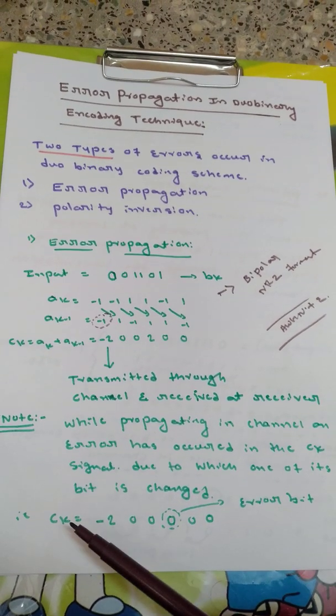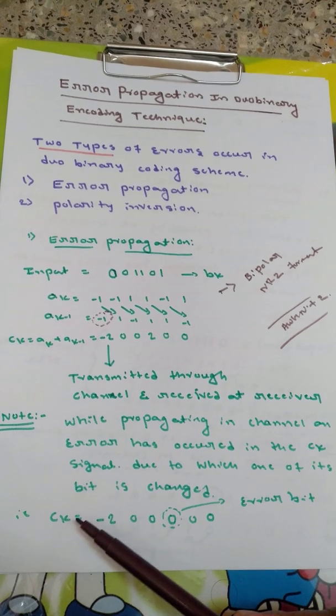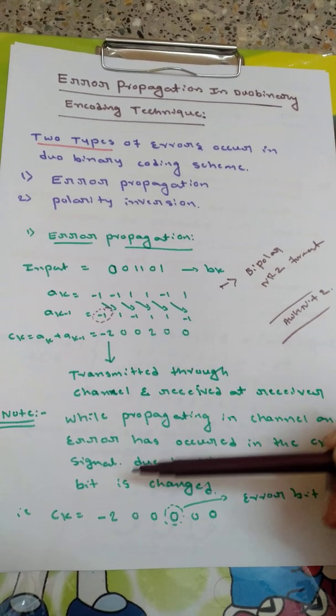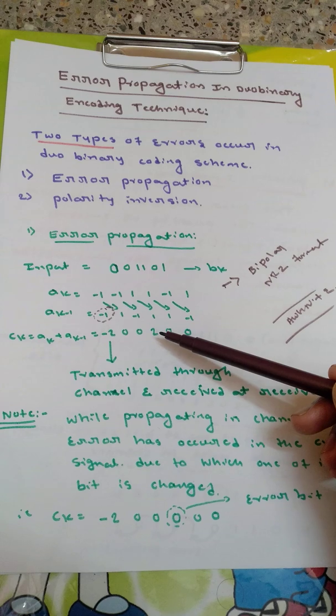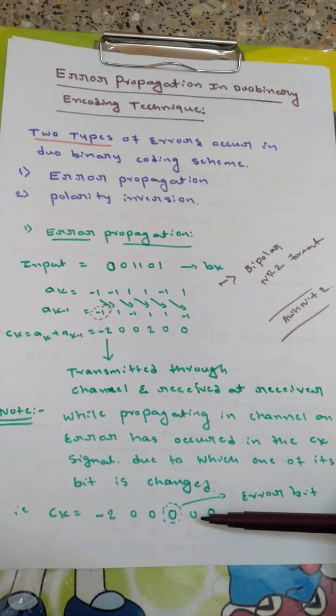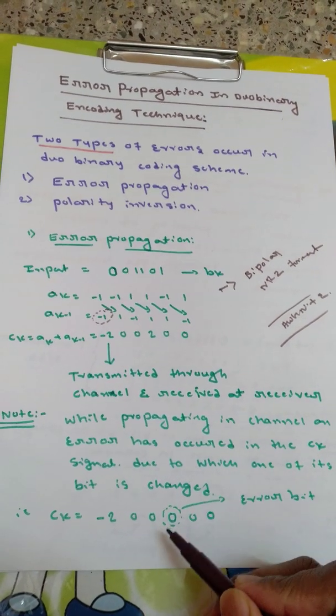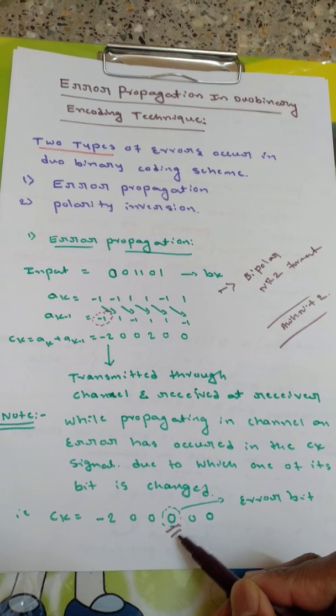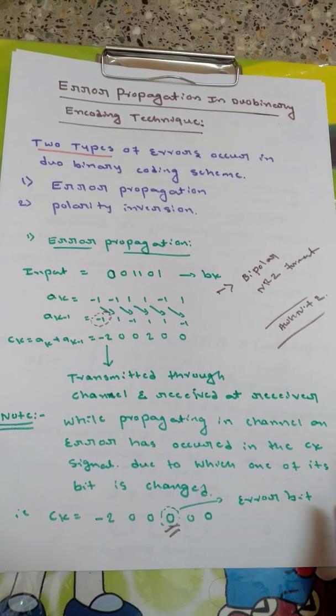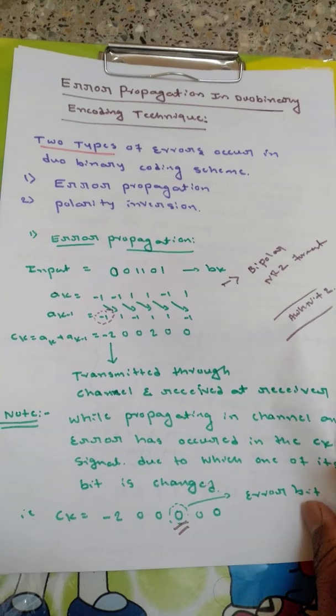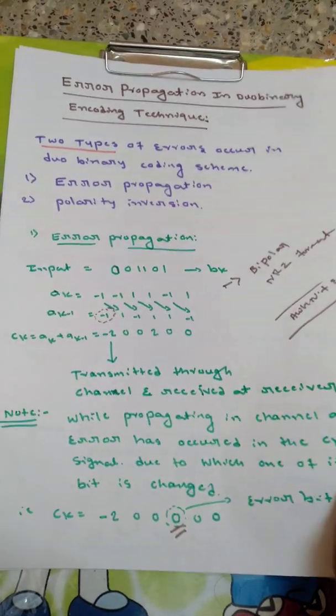And we will see what it will effect on the output. If one of bit is changed, CK equal to minus 2, 0, 0, this plus 2 has changed to 0 in this case, and 0, 0. So this is the error bit which is changed while propagating through the transmission channel. Now we will see what will happen to the output.